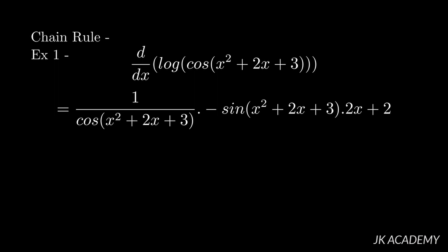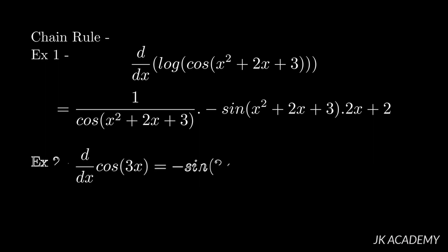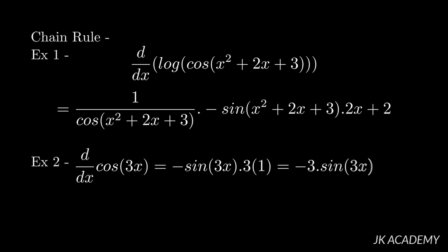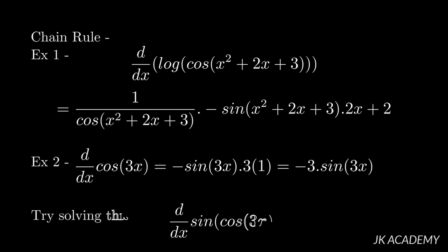Now that cos is also differentiated, we go to the inside: x squared plus 2x plus 3, whose differentiation is 2x plus 2. The chain rule means we differentiate one by one from outside to inside. Example 2: d by dx of cos(3x). Cos differentiation is minus sin, in place of x there is 3x. Differentiation of 3x is 3, so the answer is minus 3 sin(3x).